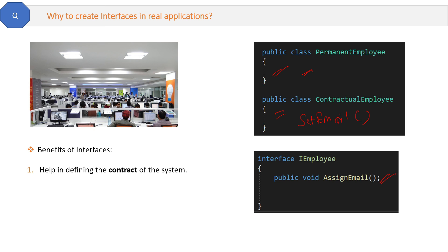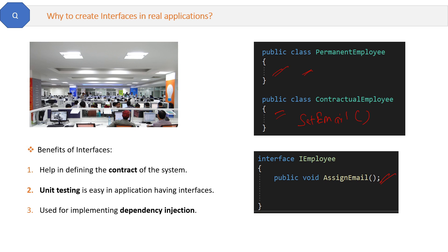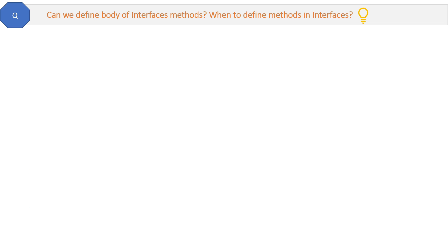Here are some benefits of interfaces: first, interfaces help in defining the contract of the system and maintaining consistency. Second, unit testing — it is easy for an application to do unit tests if they have interfaces. Third, interfaces are used for implementing dependency injection in .NET Core.